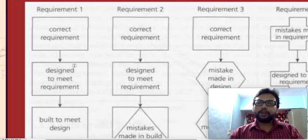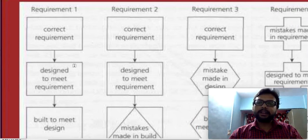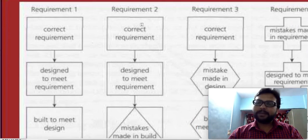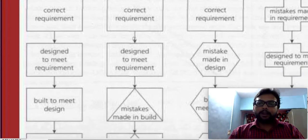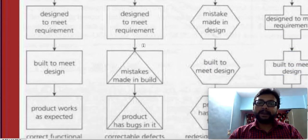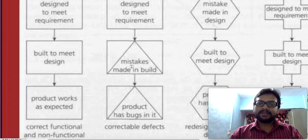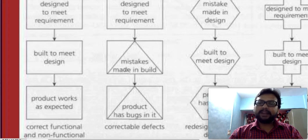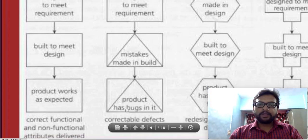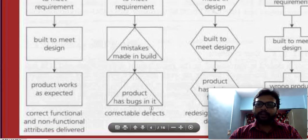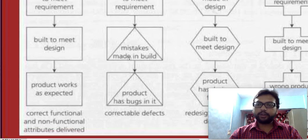If we don't follow early testing or don't check whether the things we are performing are correct, we might find problems. In the second case: the requirements are correct, and the design based on those requirements is also correct, but somehow the developer made a mistake during coding. This leads to bugs in the final software. This type is called a correctable defect — we just need to correct the code.